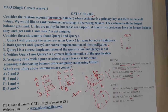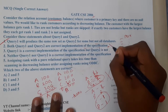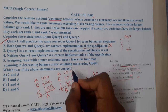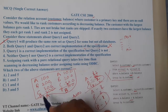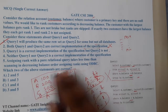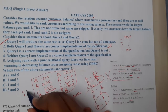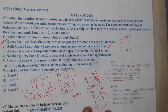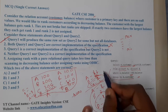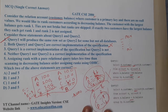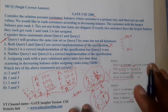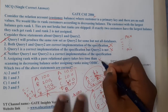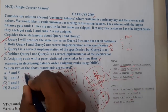Since the two queries give different results with duplicate balances, query one is not always equal to query two — so option one (same for some but not all) seems to apply. Furthermore, when C and D both have the largest balance of 300, neither should receive rank one nor rank two per the specification — both queries still assign some rank, meaning neither correctly implements the tie-skipping rule. So neither query is a correct implementation.